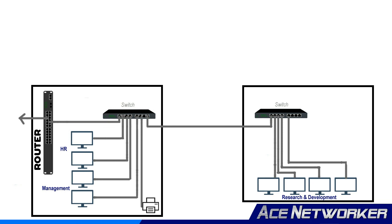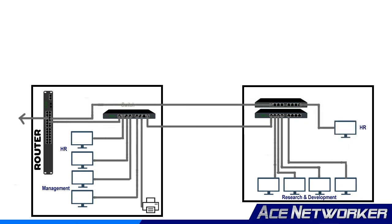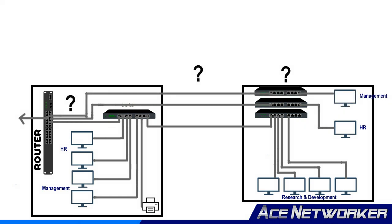If your groups are all separate, you could have a switch for each group and connect them to a router on the same network. But what if one person from the management group needs to work in the same building as the research and development group? Without a way to divide their traffic, you'd have to string another network cable to that building and add another switch just for that one person — and that can get expensive and tedious.